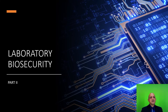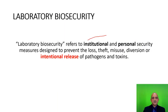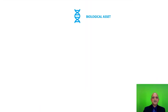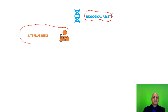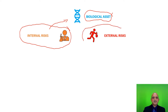We now move on to part 2, which focuses on laboratory biosecurity. Security basically refers to the institutional and personal security measures designed to prevent loss, theft, misuse, diversion, or intentional release of pathogens and toxins. We have our biological asset — I use the word asset as this is a biosecurity term. Internal risks may come from your laboratory workers themselves or from contractors who may have access to the biological asset. External risks may be in the form of data theft or theft of the biological agent itself. As a biorisk manager, we have to address both internal and external risks.